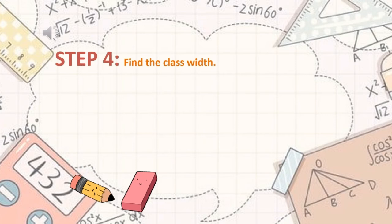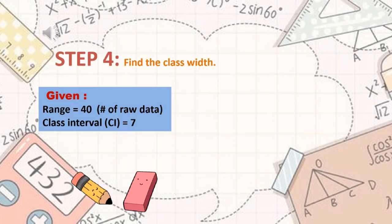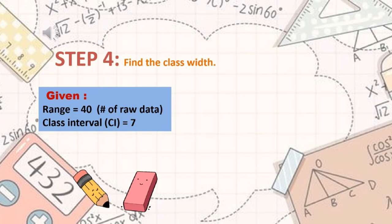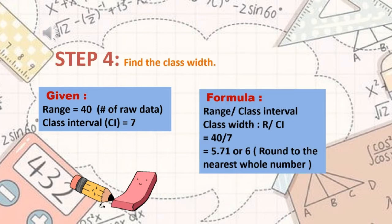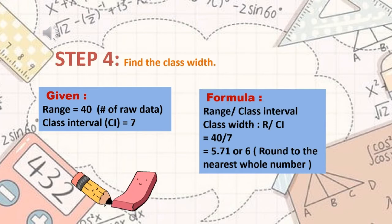Next is step 4: find the class width. To get the class width, we follow the formula: range divided by class interval. Our range is 40 and our class interval is 7. So 40 divided by 7 equals 5.74, which rounds to 6 because we need to round off to the nearest whole number.